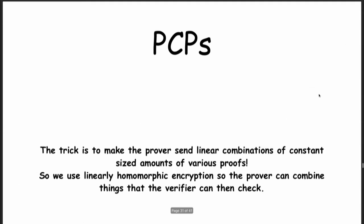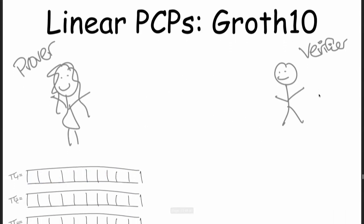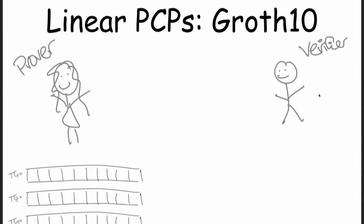This was introduced in Groth10 in two different forms. Groth10 introduced two different forms of a proof: one was designated verifier, and one was publicly verifiable — which is the type used in Zcash and most purposes you would think of for SNARKs today.